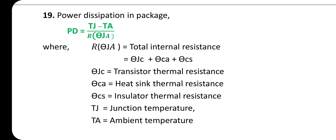The power dissipation in a package: P_D = (T_J − T_A) / R_θJA, where R_θJA is the total internal thermal resistance = θ_JC + θ_CA + θ_CS. Here θ_JC is the transistor thermal resistance, θ_CA is the heat sink thermal resistance, θ_CS is the insulator thermal resistance, T_J is the junction temperature, and T_A is the ambient temperature.